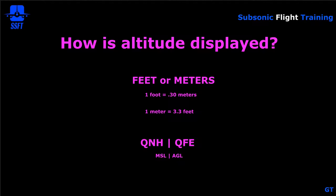How is altitude displayed? Most of the time it's displayed in feet, or it could be displayed as both feet and meters. One foot equals 0.30 meters, or one meter equals 3.3 feet. If you're flying in most of the world, you're probably flying in feet, but there are areas — such as China — where meters are used.